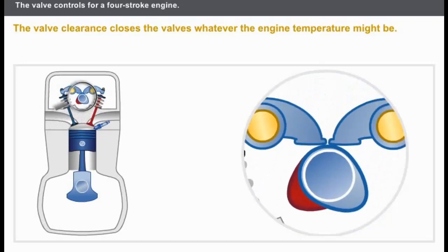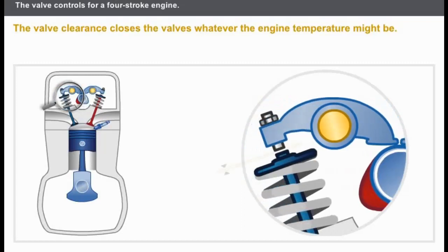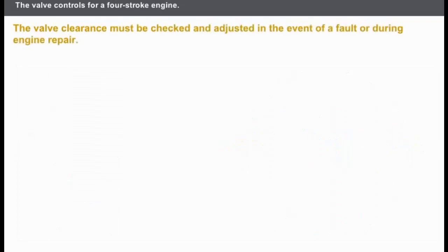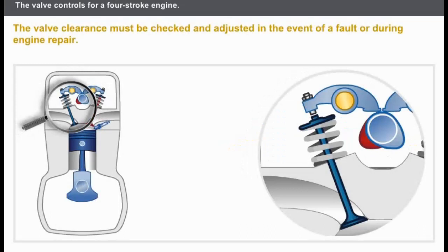When the valve is closed, the seal from the valve head to the valve seat needs to be perfect. The cam lobe must not put strain on the valve. The valve clearance ensures the valves close whatever the engine temperature might be. The exhaust valves are exposed to much greater heat than the intake valves.